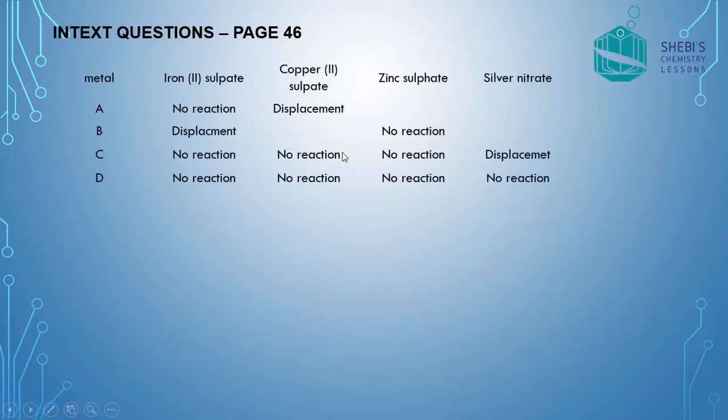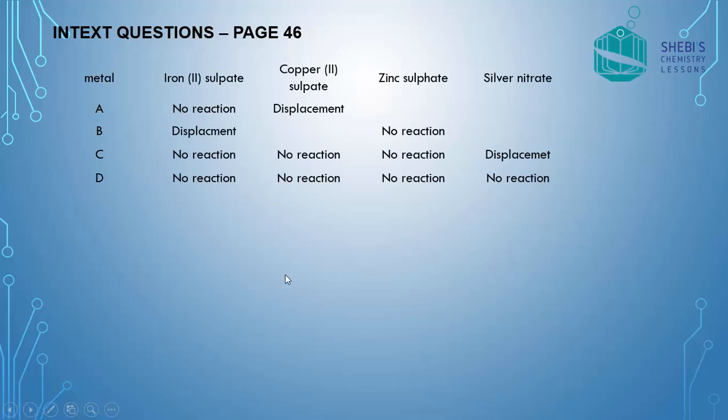So we will see how to solve the equation. Now for your reference the table is added here. When you take A with iron sulfate no reaction but with copper sulfate displacement. So the position of A is below iron and above copper. Below iron and above copper which metal you can see lead is the metal. Actually we are not asked to find out which metal but for our reference we can write A is lead.